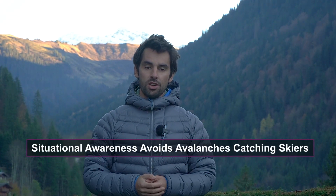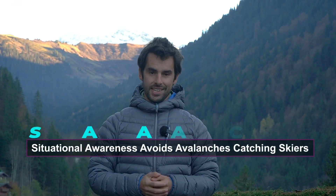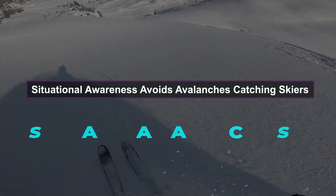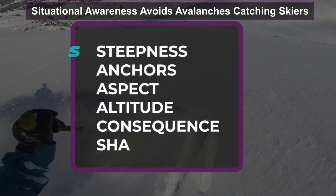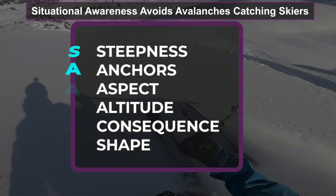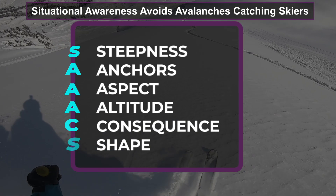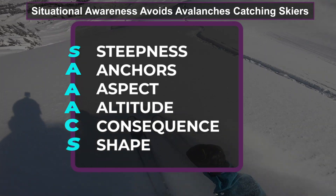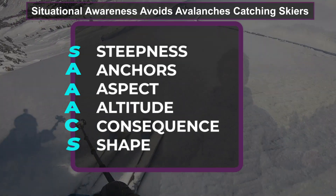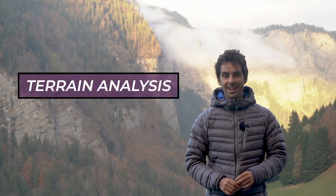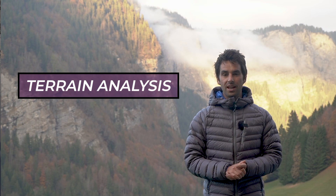So there we have six terrain features to look out for, remembered with the phrase: Situational Awareness Avoids Avalanches Catching Skiers. Next time you're in the mountains, look at a slope and see if you can determine all six features. By building this skill set, you'll be able to work out the likelihood and consequence of an avalanche and choose appropriate terrain. If you want a long and successful time off-piste skiing and snowboarding, terrain analysis is your most reliable and valuable skill set.